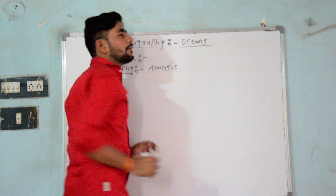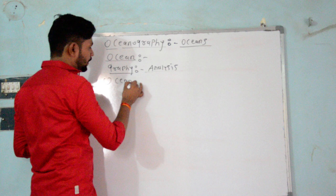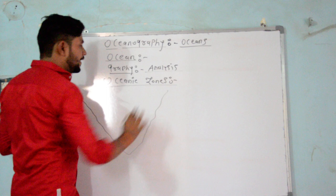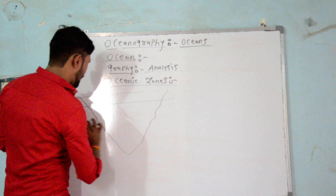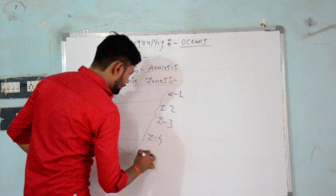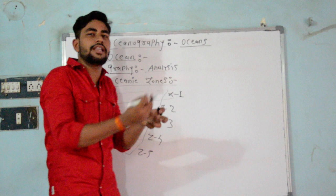Today we will deal with the concept of Oceanic Zones. For Oceanic Zones, we consider the picture of the ocean. The ocean has different zones — Zone 1, Zone 2, Zone 3, Zone 4, Zone 5 — and each zone has its own spatial limits. In geology, the ocean is bifurcated into different zones.